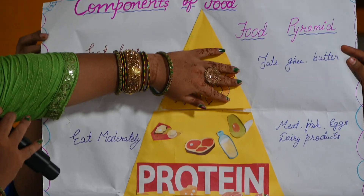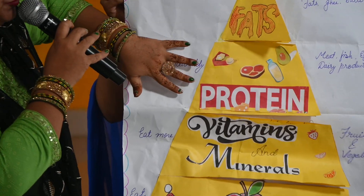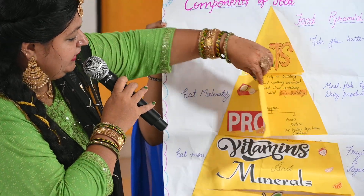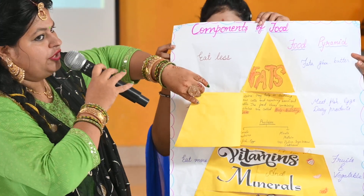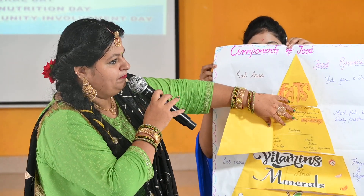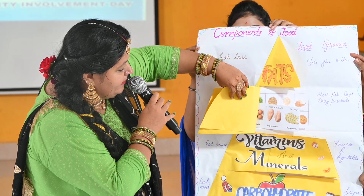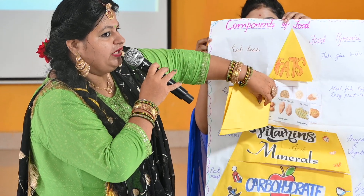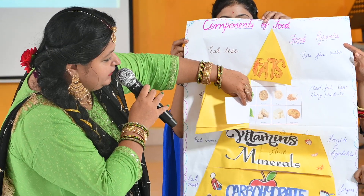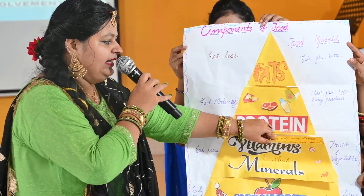The second component of food is protein, as you can see in the triangle shape. We must use protein in our food moderately. Protein is also called body-building food and proteins are of two types: plant proteins and animal-based proteins. Here are some examples and pictures of plant and animal-based proteins. We must use dairy products, eggs, meats and all in our daily life.